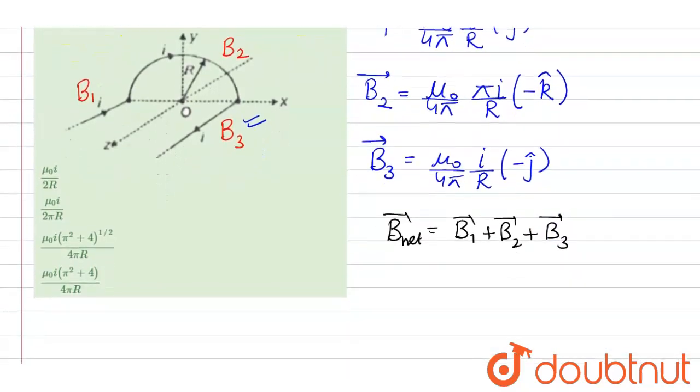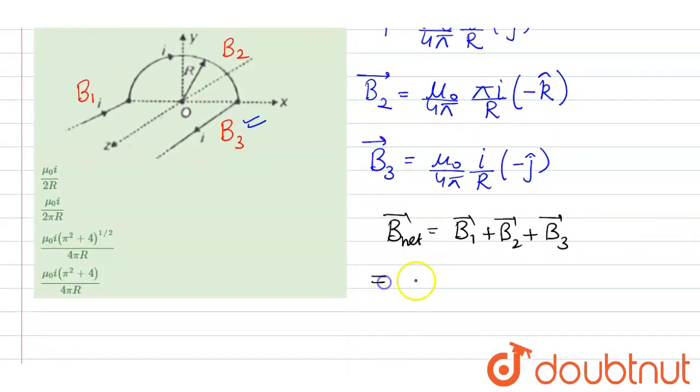So adding vectorly here we get it will be mu naught upon 4 pi minus 2i by r j cap plus mu naught upon 4 pi pi i by r minus k cap.